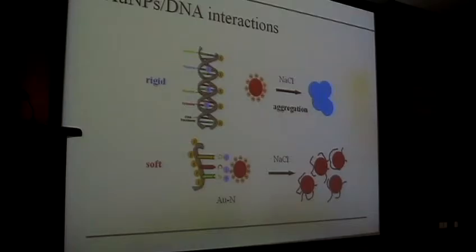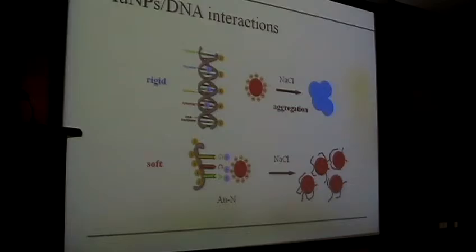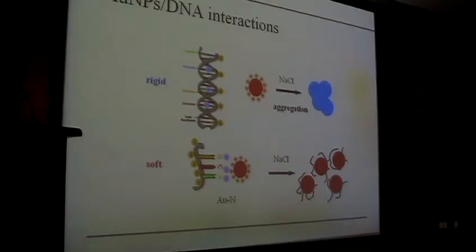The gold nanoparticles are coated with a layer of negatively charged citrate ions, and DNA is a highly negatively charged polyelectrolyte because of its phosphate backbone. As we can expect, DNA and gold nanoparticles when they meet have electrostatic repulsion between the two. So if it's double-stranded DNA added to a solution of gold nanoparticles, they cannot interact significantly.